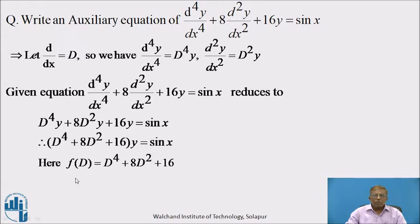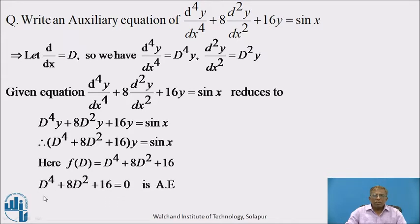When we equate f(D) = 0, we get an auxiliary equation. That is, D⁴ + 8D² + 16 = 0 is the auxiliary equation for the given differential equation.